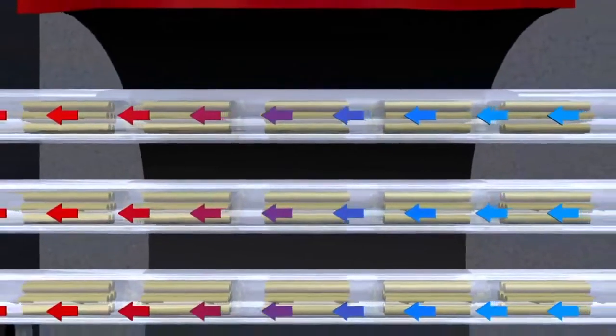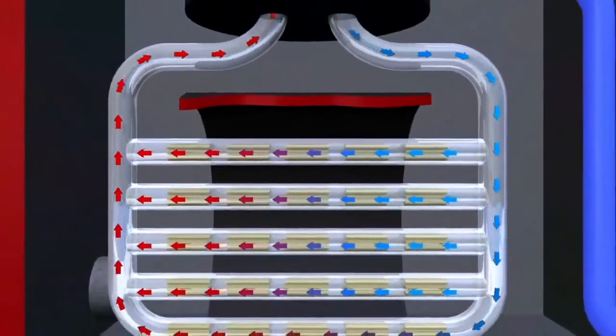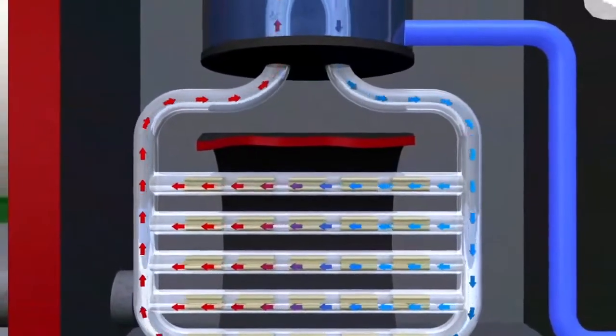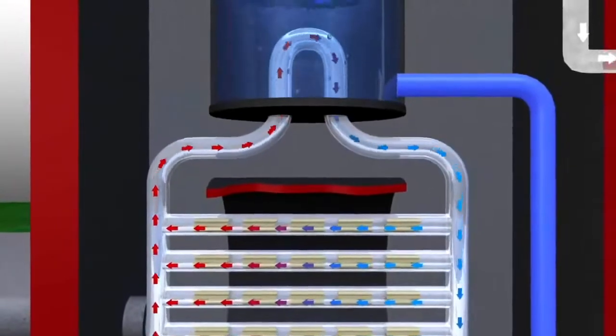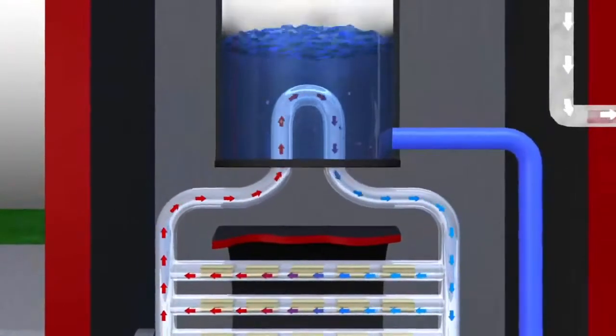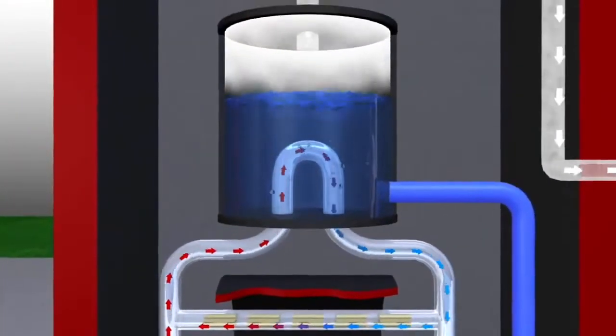The heated heavy water flows through a closed-loop system that's pumped through the reactor to a set of steam generators, where it transfers the heat to ordinary water. When that water boils, it turns into steam.